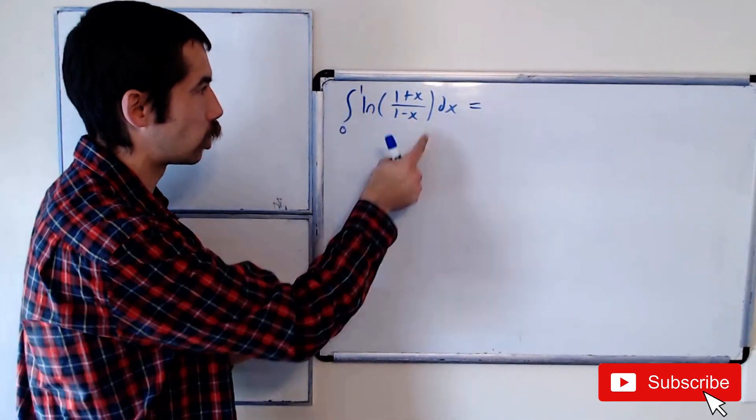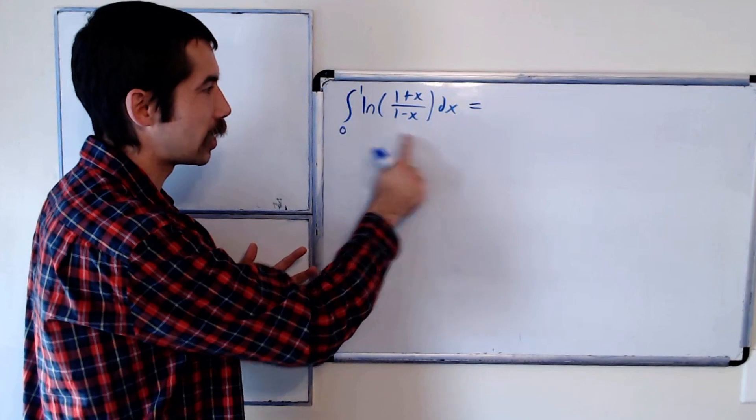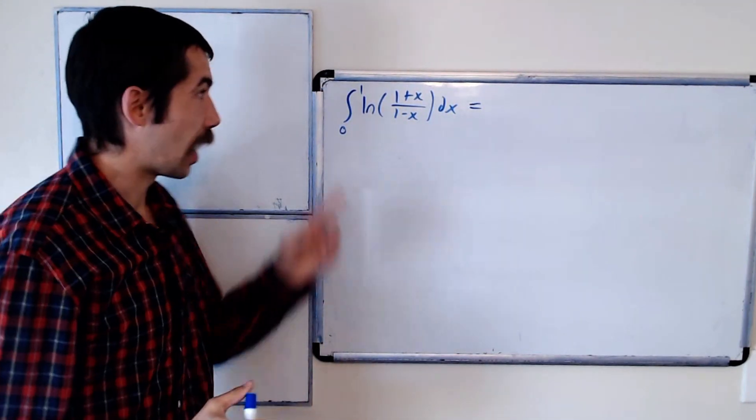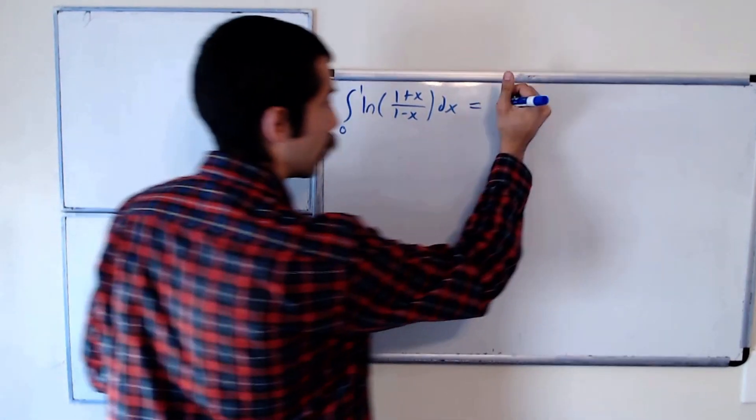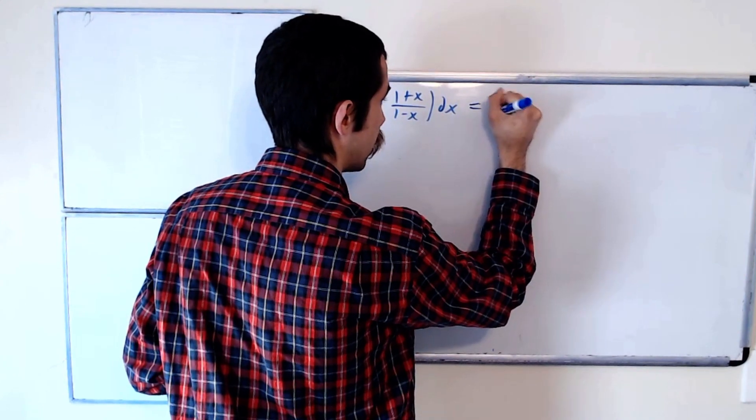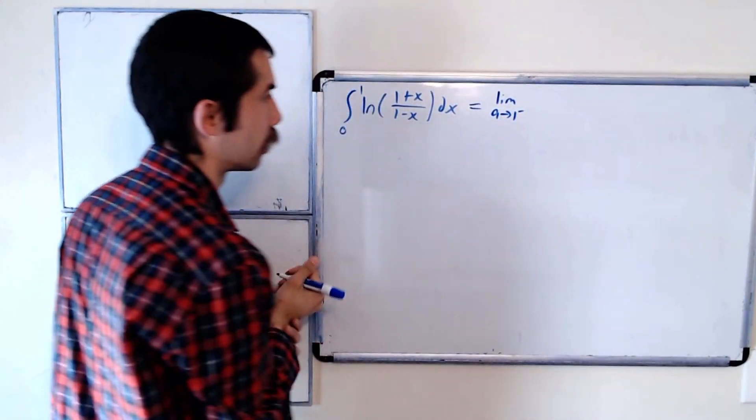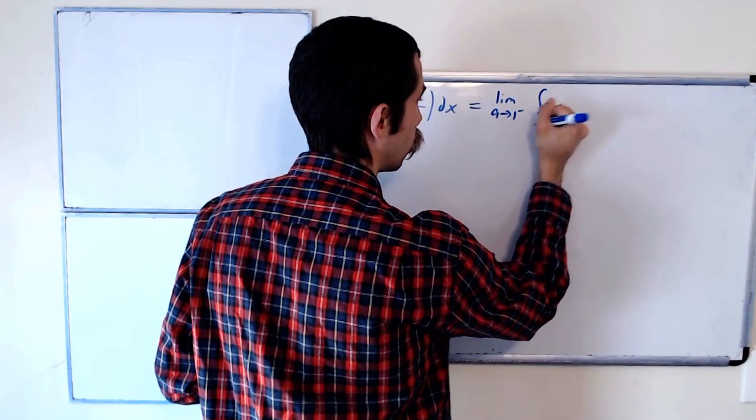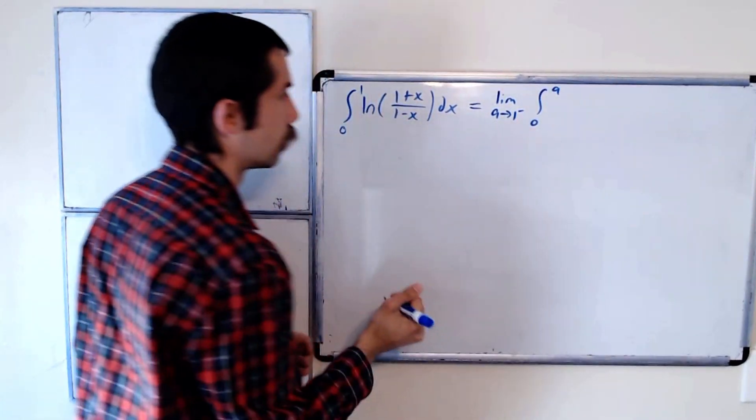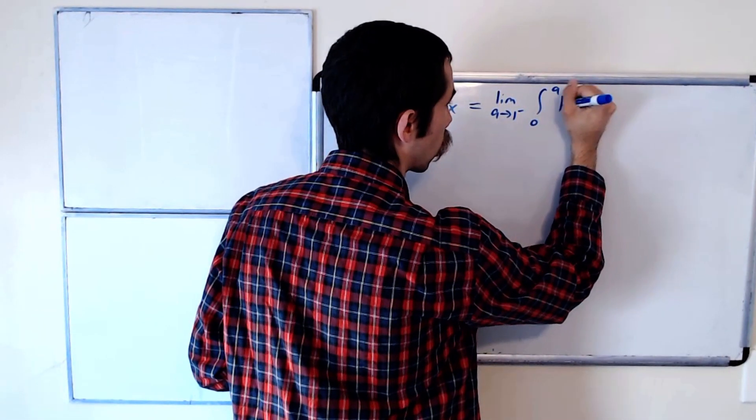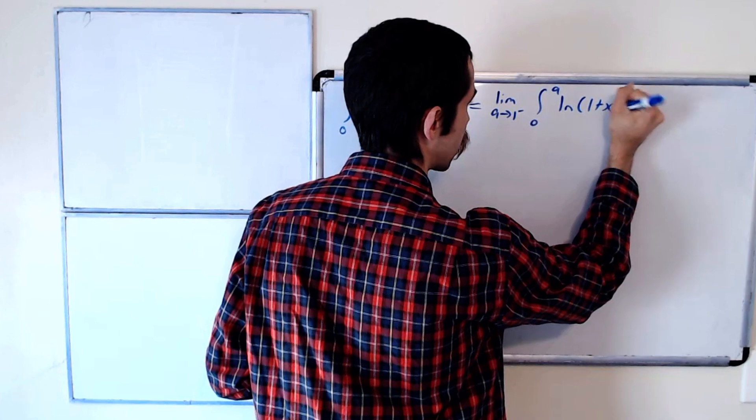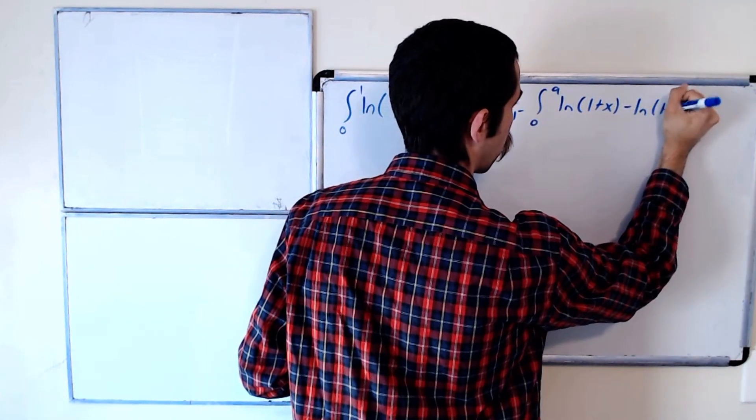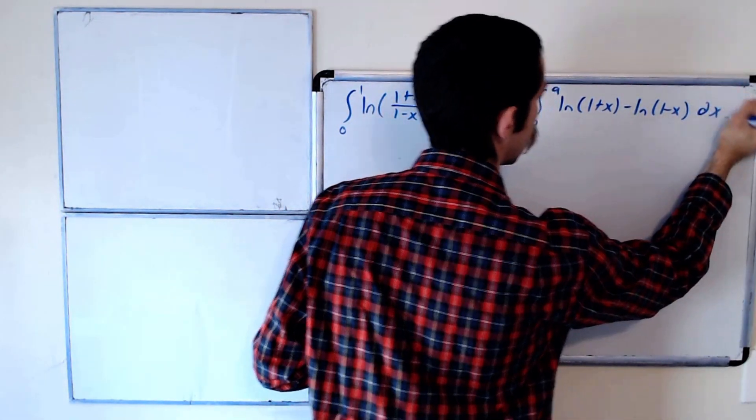The first thing you should notice is if you just try to plug in the endpoints, our function is not defined at x equals 1, so we have to evaluate the limit as a goes to 1 from the left of the integral from 0 to a. And now I'm going to use some log rules, ln of 1 plus x minus ln of 1 minus x dx.